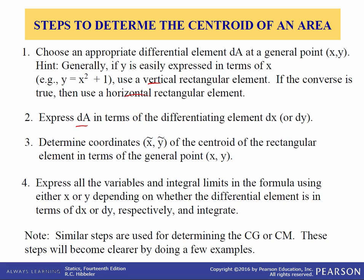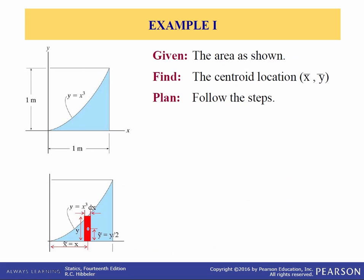The next step is to express the differential element in terms of the differentiating elements dx or dy. Determine the coordinates x-tilde, y-tilde of the centroid of the rectangular element in terms of the general point x and y — meaning you'll write an equation for x-tilde as a function of x and an equation for y-tilde as a function of y. Express all variables and integral limits using either x or y depending upon whether the differential element is in terms of dx or dy. Then integrate. We use similar steps to determine the center of mass.